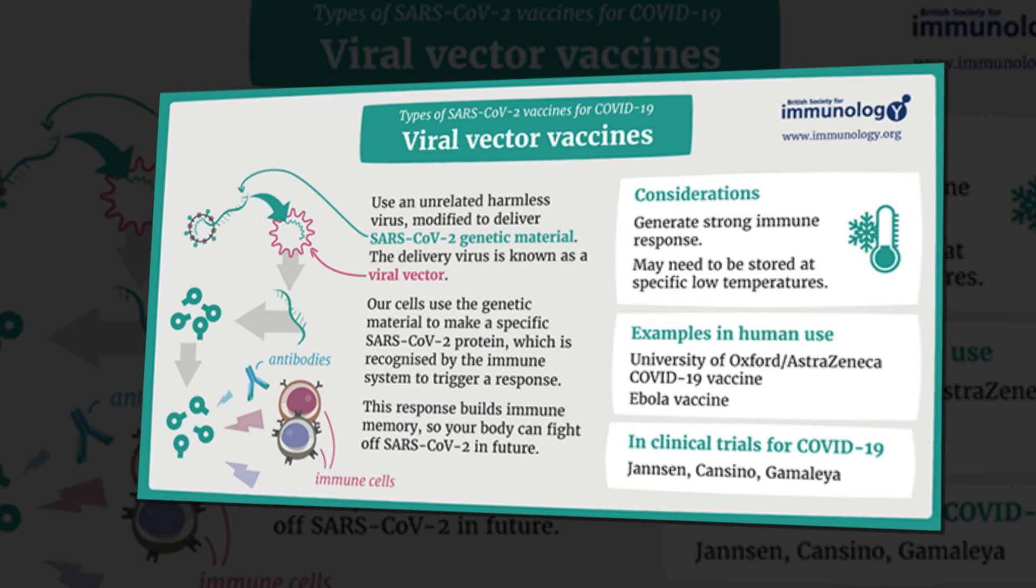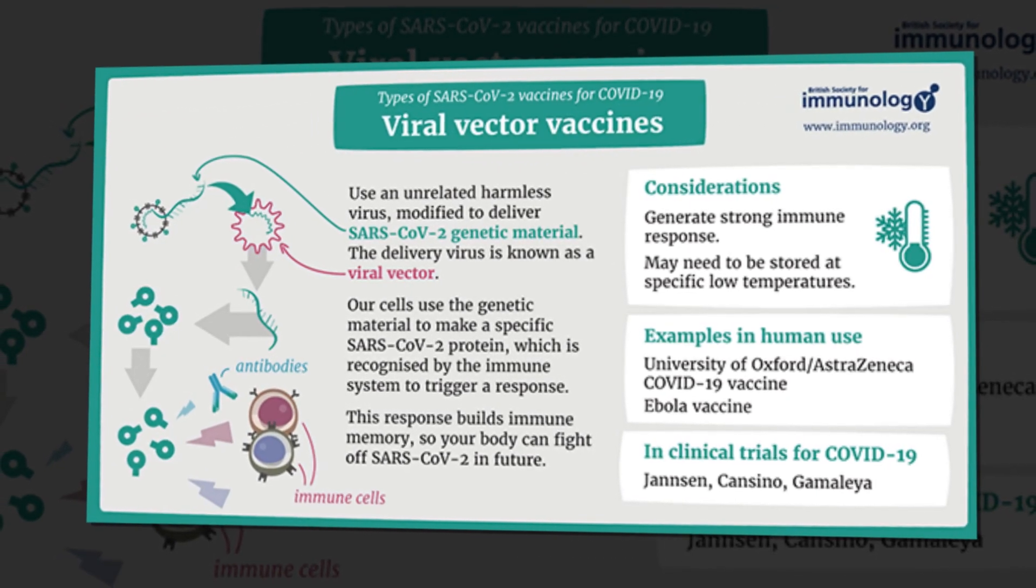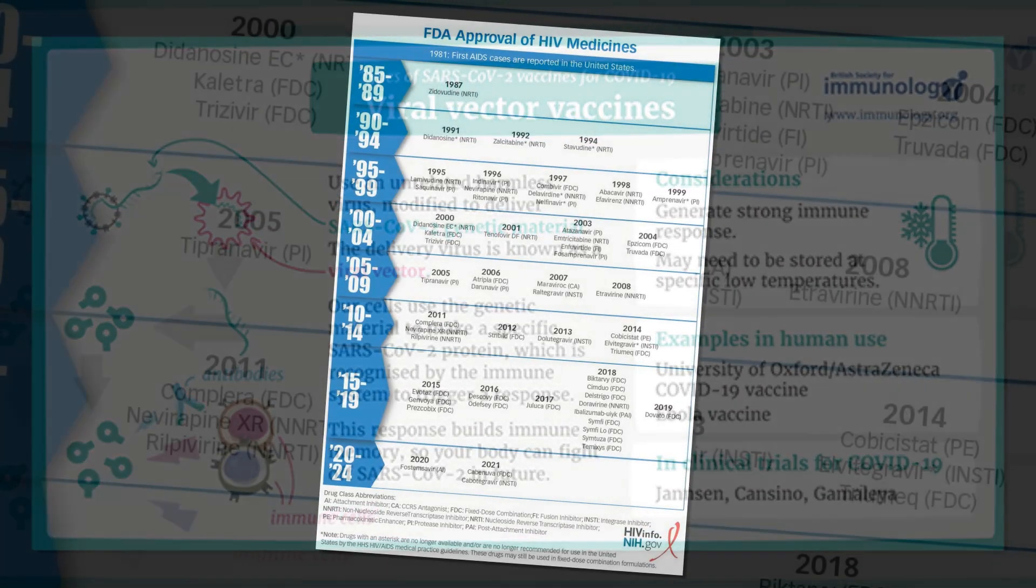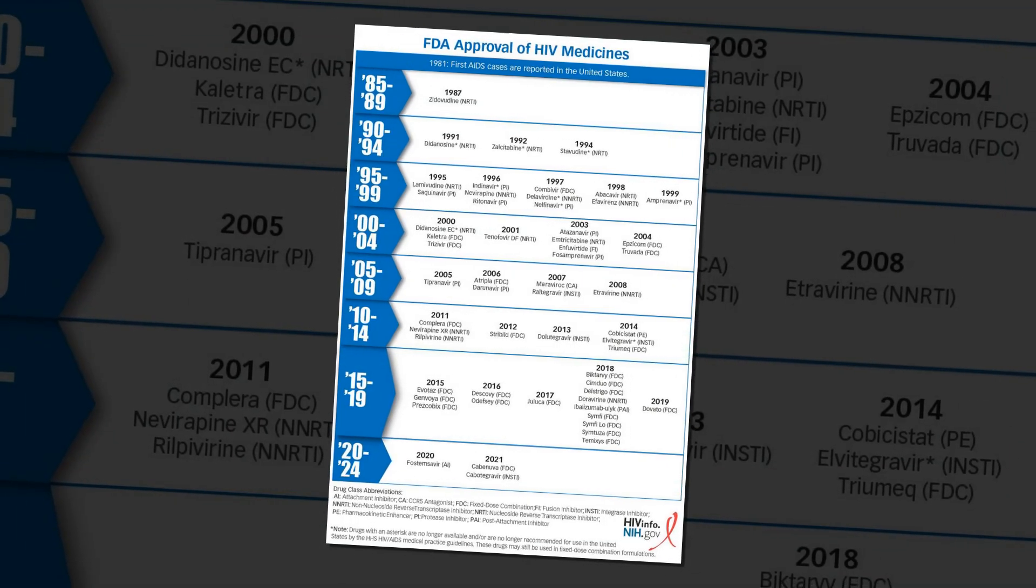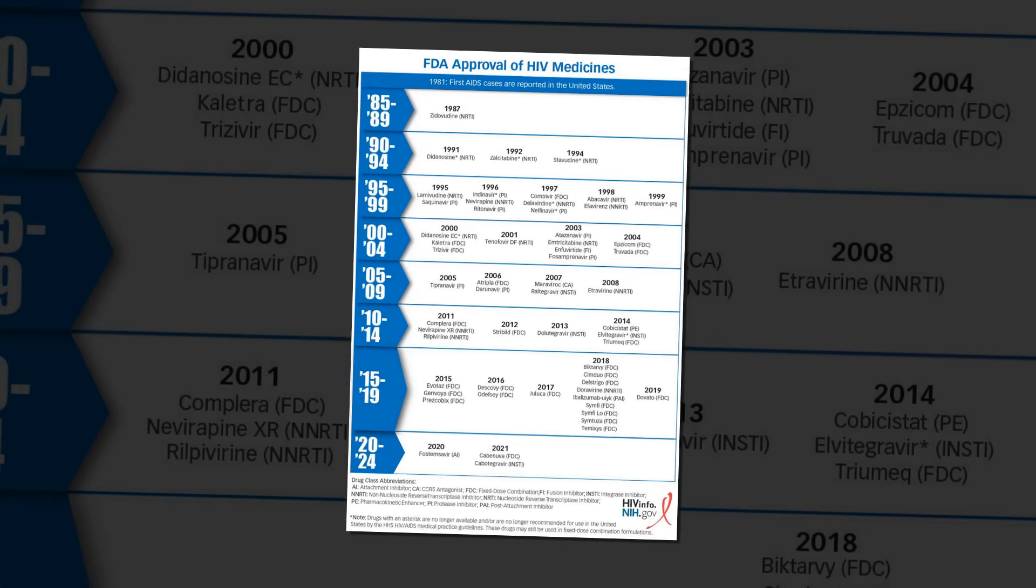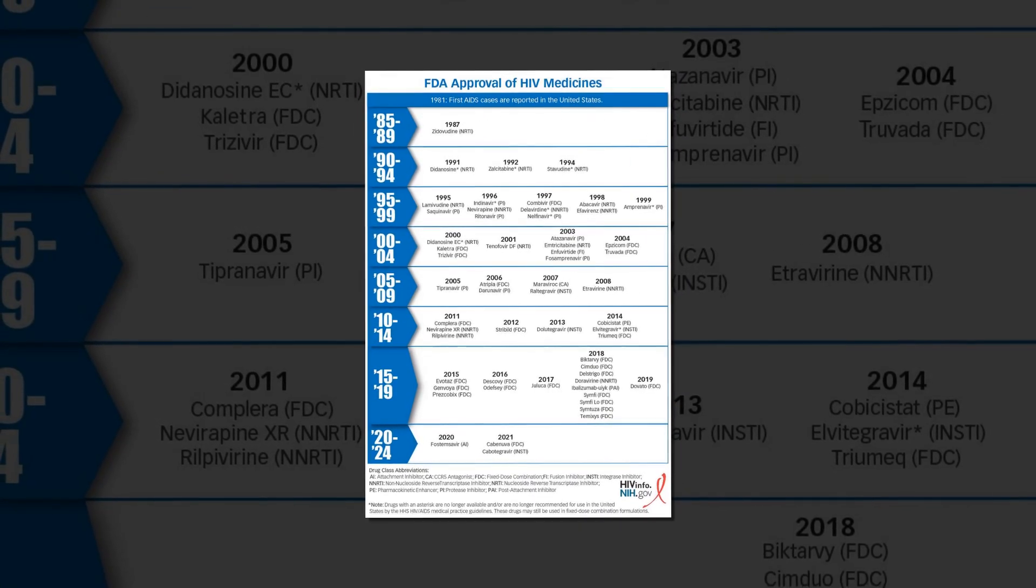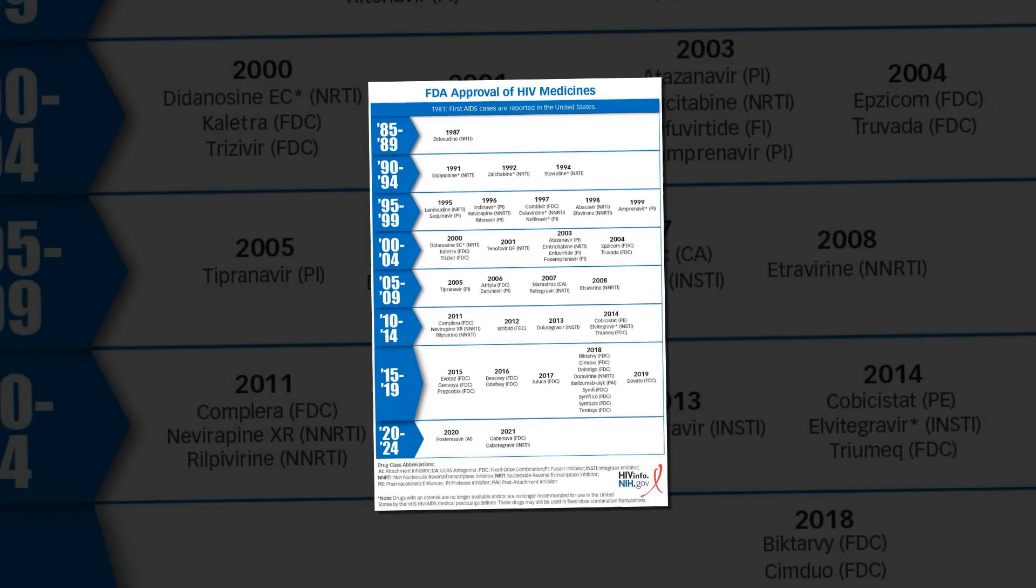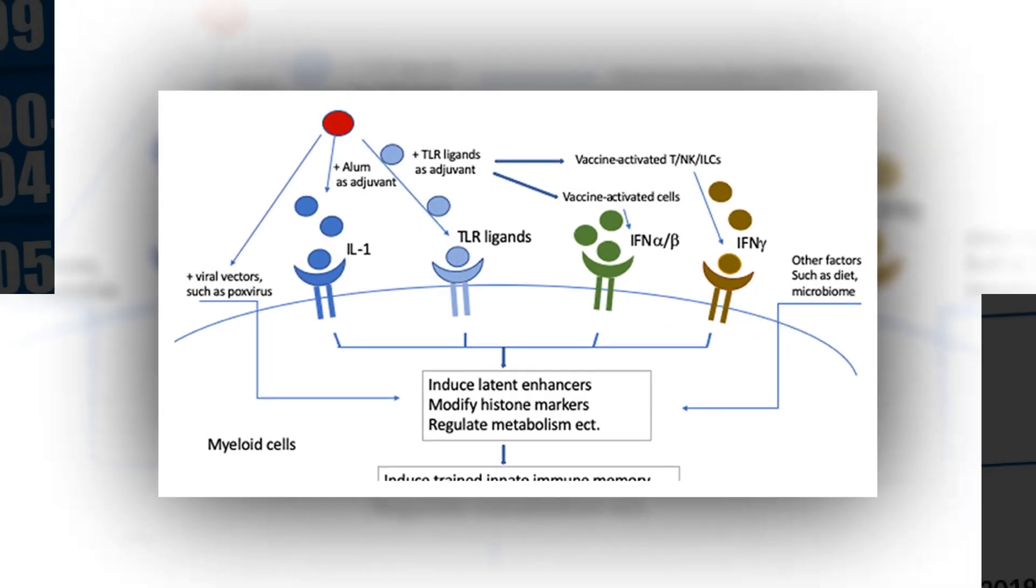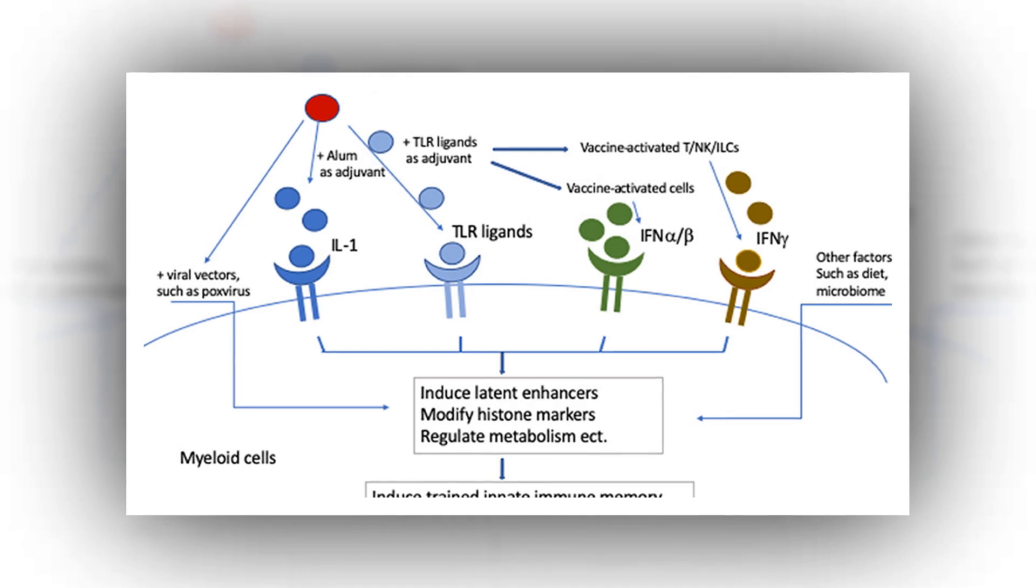In the IAVI G001 trial, all but one of the 36 HIV-negative participants who received a vaccine containing eOD-GT8 60-mer produced desired precursor B cell responses. After a booster, these cells made antibodies with greater affinity for the virus. These findings demonstrate, for the first time, that one can design a vaccine that elicits made-to-order antibodies in humans, Schief said at the time.